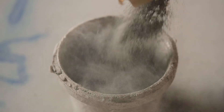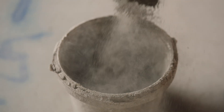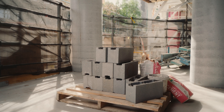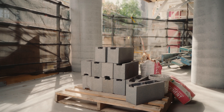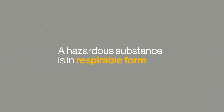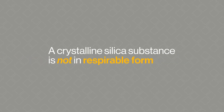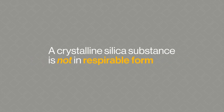So what is the difference between a hazardous substance and a crystalline silica substance? Put simply, a hazardous substance is in respirable form and a crystalline silica substance is not in respirable form.